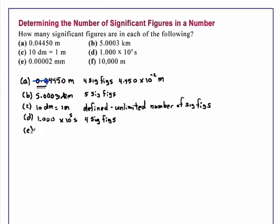E, 0.00002 millimeter. Now very similar to example A, the zeros that precede the first non-zero digit do not count. So this has one significant figure.